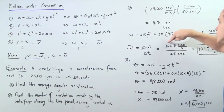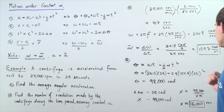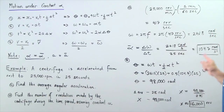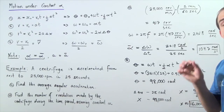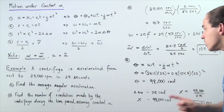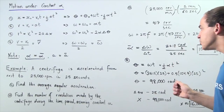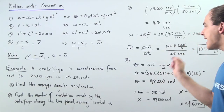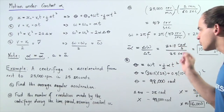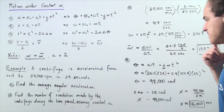We divide 2618 by 25 and get approximately 104.7 radians per second squared as our average angular acceleration, which is identical to the instantaneous angular acceleration. Now we go to part B.